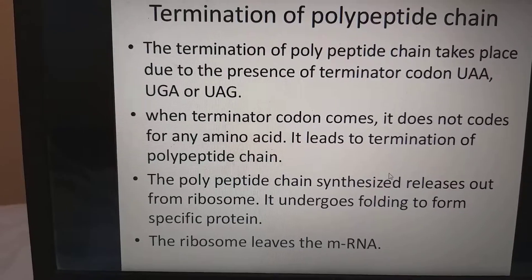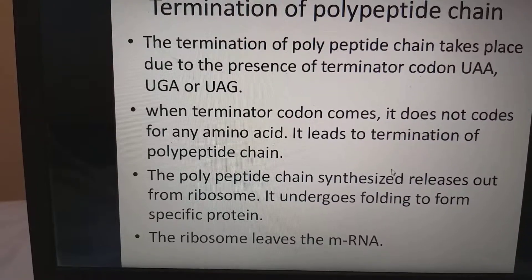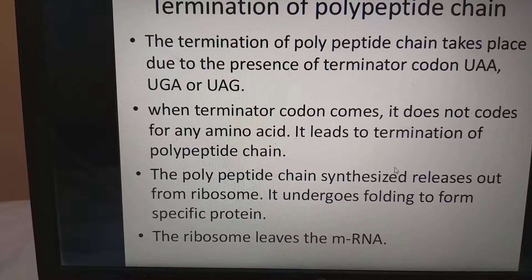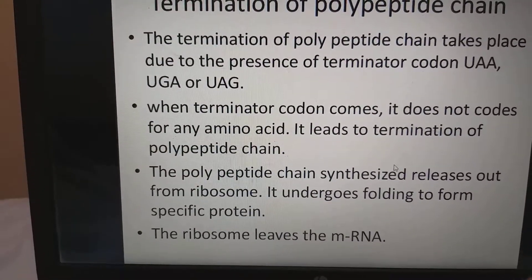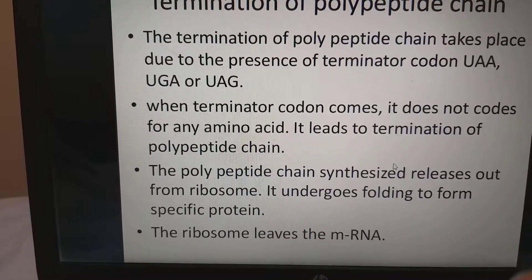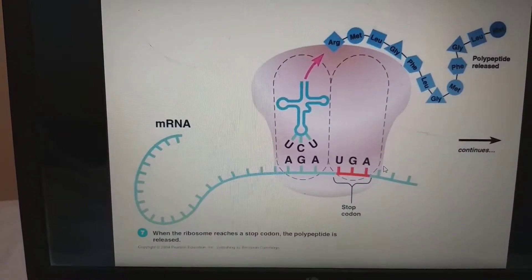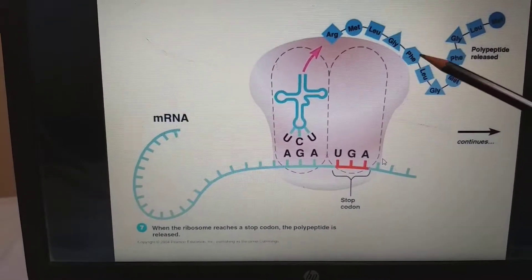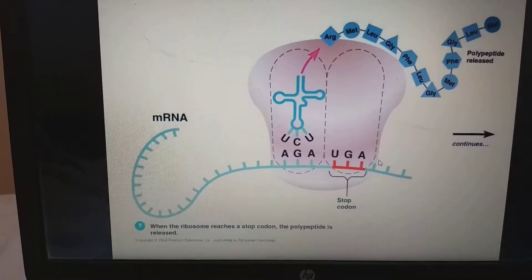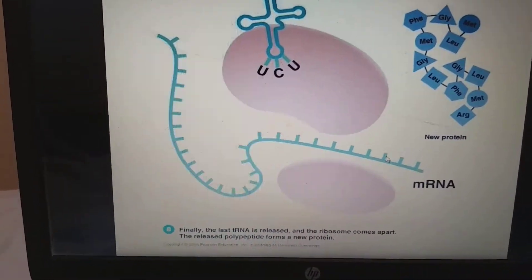Step 5 — Termination of polypeptide chain: termination takes place due to the presence of terminator codons UAA, UGA and UAG. When a terminator codon is reached, it does not code for any amino acid and leads to termination of the polypeptide chain. The polypeptide chain is released from the ribosome and undergoes folding to form a specific protein. The ribosome then leaves the mRNA.